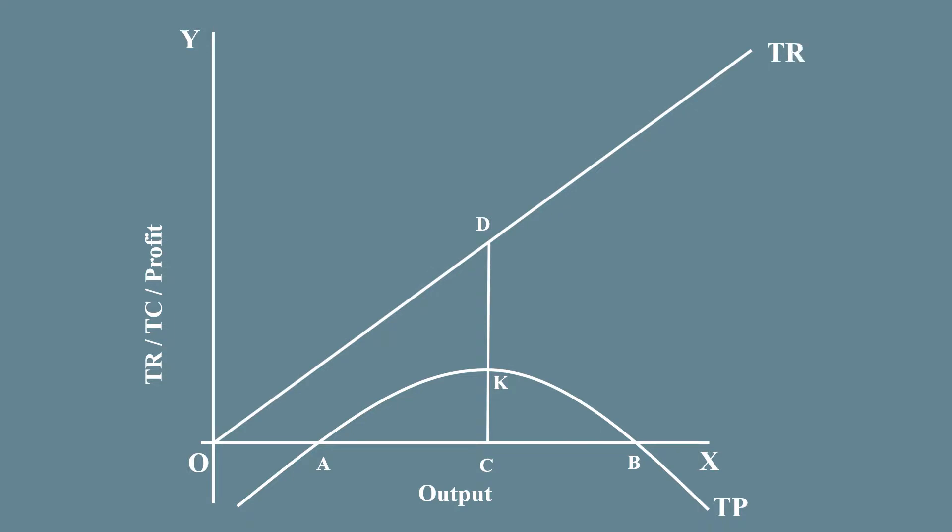Draw an upward sloping straight line through point D and name it as TR. It is the total revenue curve. Draw a straight line parallel to the total revenue curve and name it as T.